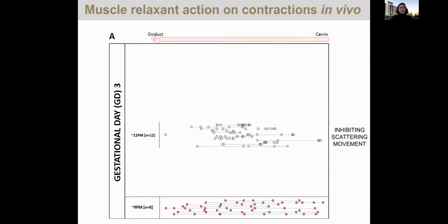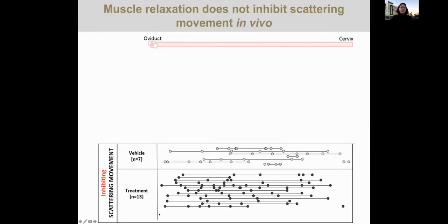To test if the second phase of movement is dependent on muscle contractions, we gave the muscle relaxant once the embryos arrived in the middle of the horn — around noon on day three — and evaluated location about eight or nine hours later. We saw that in both vehicle treatment and muscle relaxant treatment, embryos were able to scatter and space along the uterine horn. This suggests that the second phase of embryo movement is independent of muscle contractions.